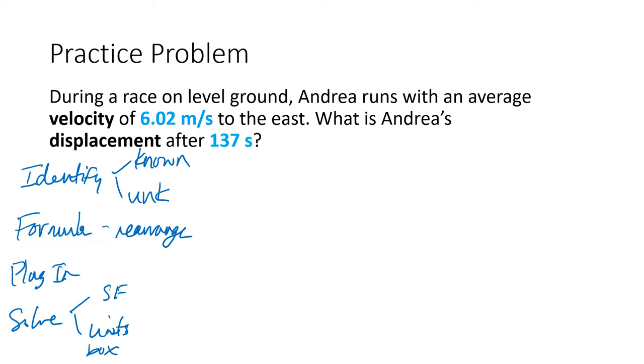Looking at this problem, during a race, Andrea runs with an average velocity of 6.02 meters per second to the east. So that means she's running in a positive direction. What is Andrea's displacement after 137 seconds? So that's like after a certain amount of time, what is her displacement? That would be delta t.